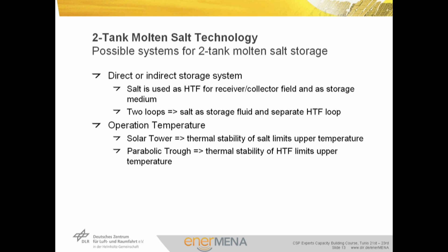There are two different basic options for implementing two-tank molten salt storage systems. In direct storage systems, molten salt is used both as heat transfer fluid in the solar absorbers and as storage material. In indirect systems, the heat transfer fluid in the absorbers is different from the molten salt used in the storage. The decision between direct and indirect systems depends on the operation temperature of the CSP facility. In today's parabolic trough systems, thermal oil is used in the absorbers, so two separate loops are used. In central receivers, molten salt is also used as HTF, so direct storage can be applied.